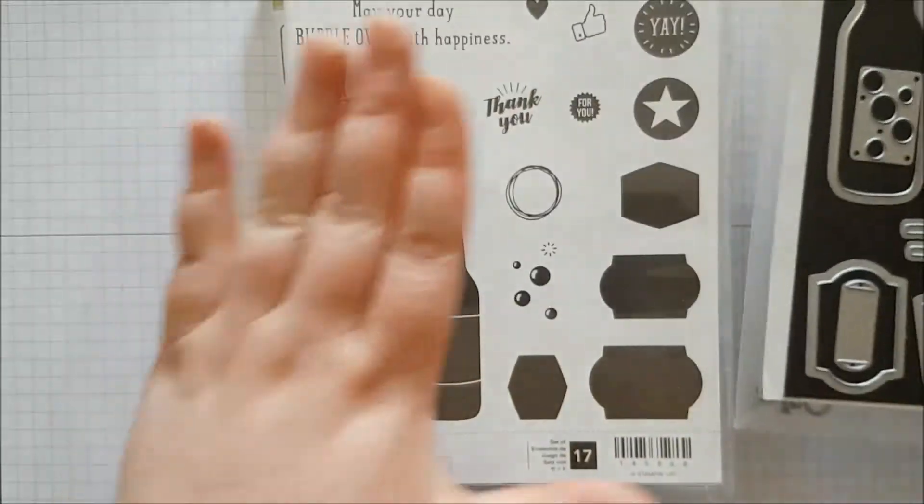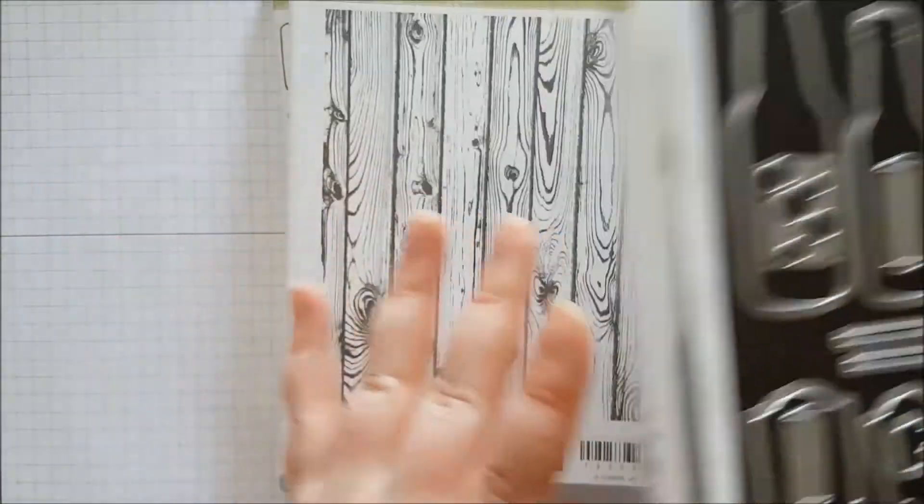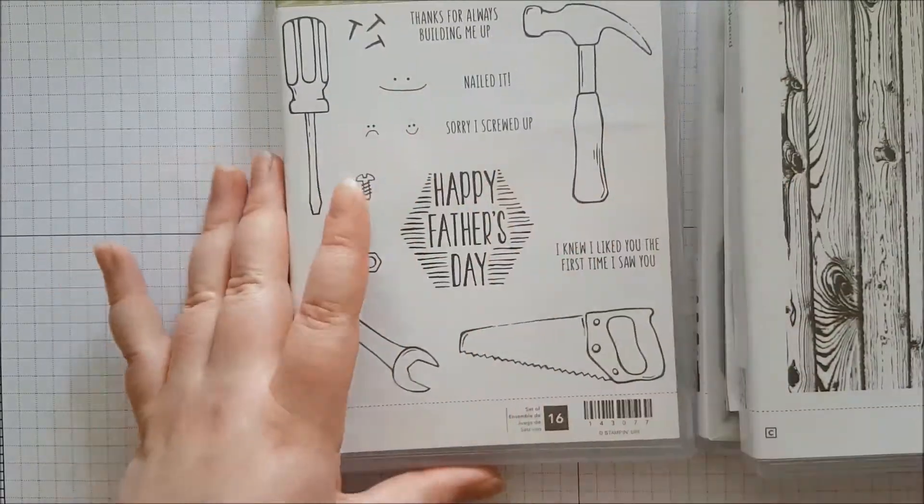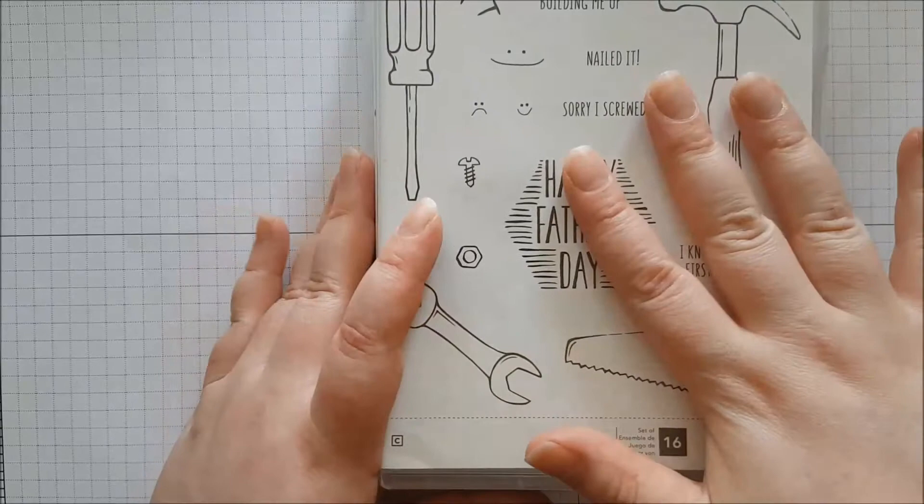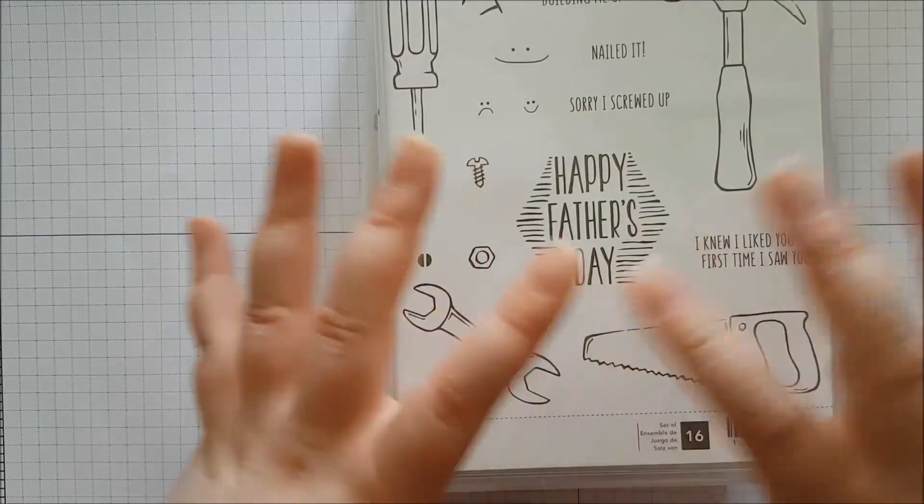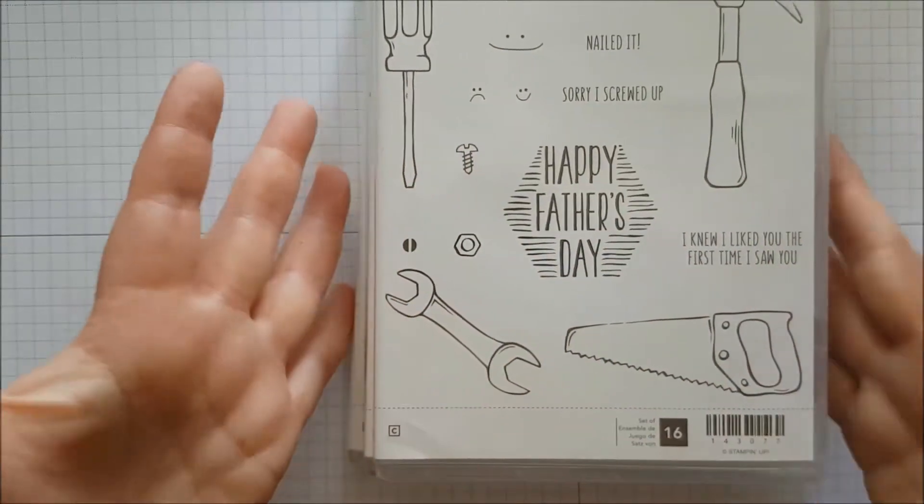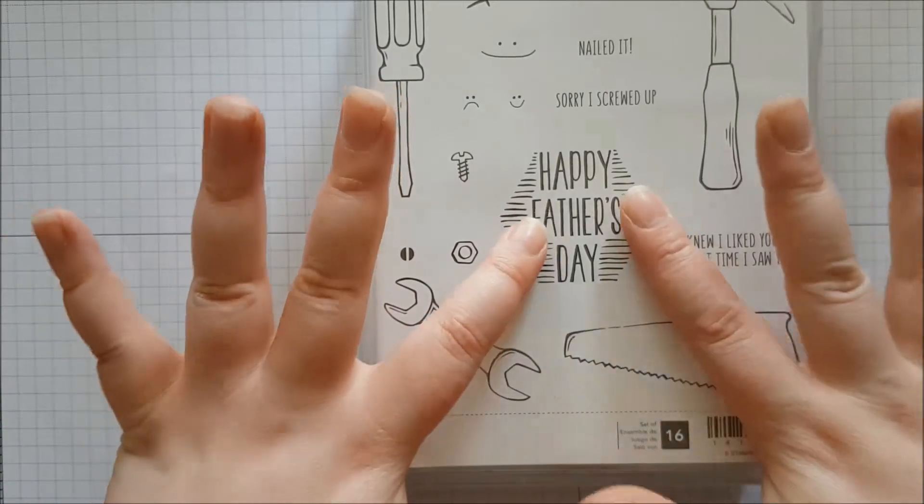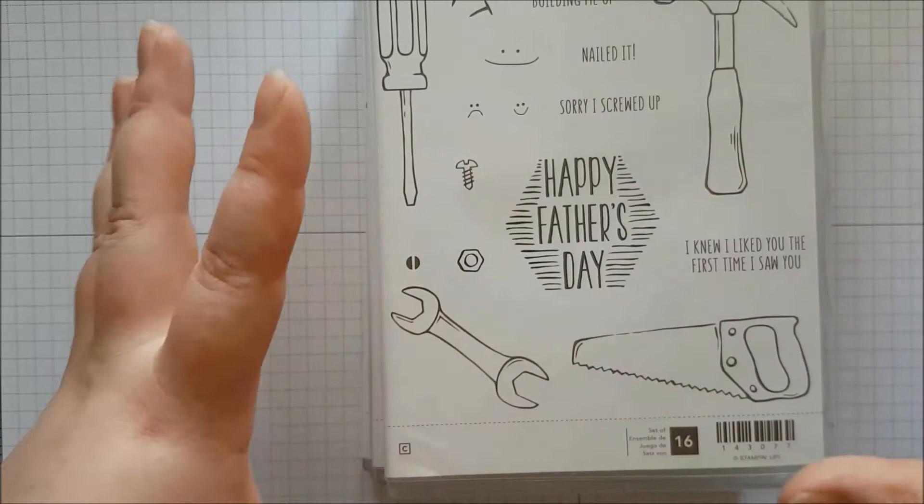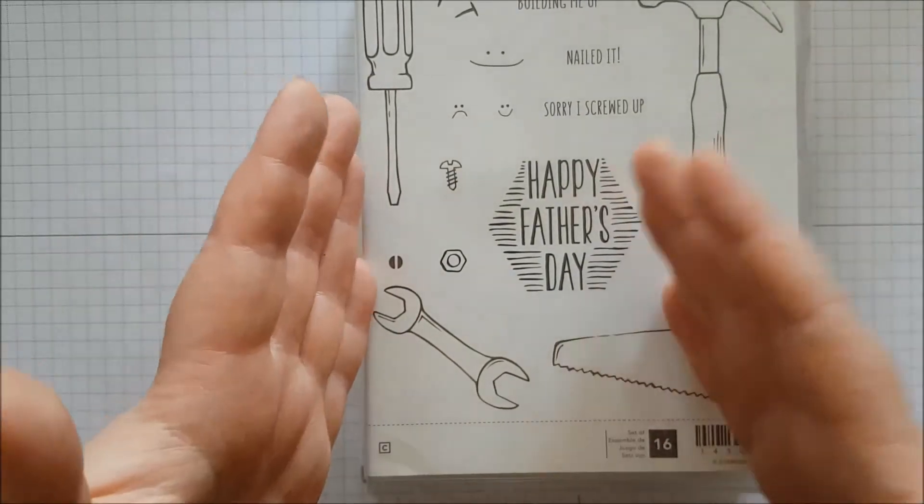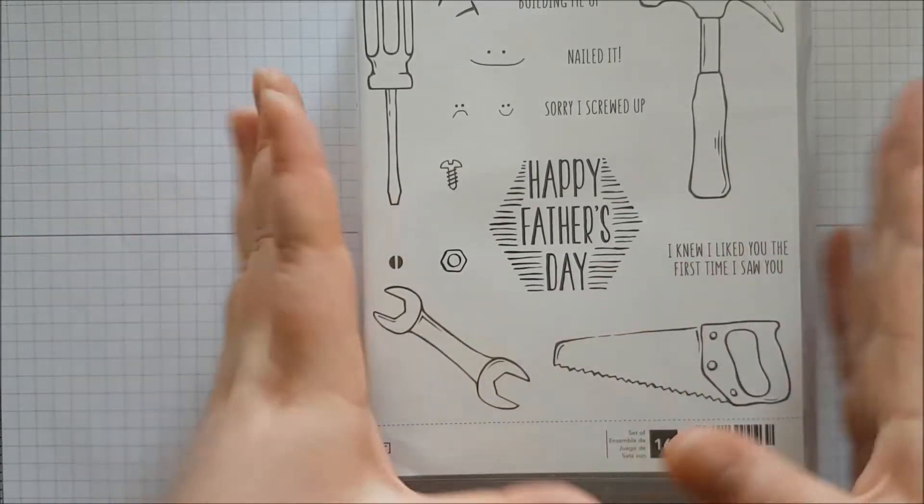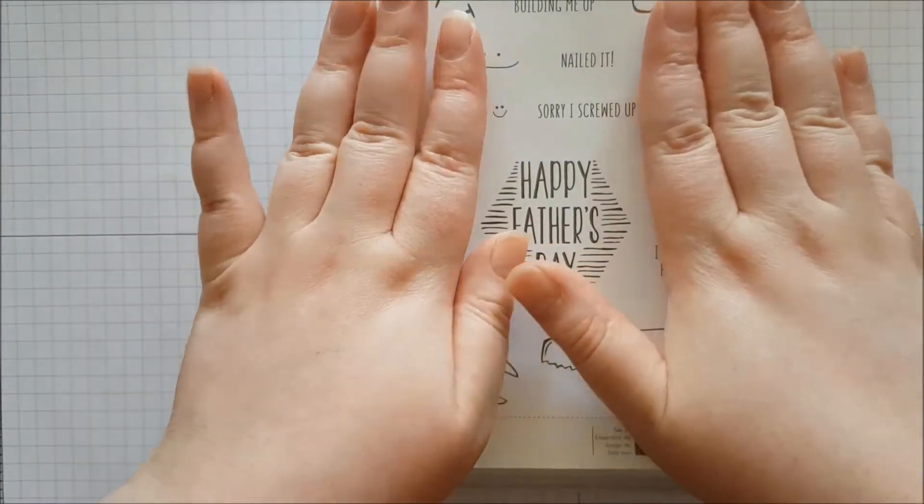For this card you'll need the Bubble Over stamp set and matching dies. You'll also need the Hardwood background stamp. And I'm going to be using a retired stamp set, Nailed It, just for the Father's Day sentiment. I've looked through all my stash and I cannot find a Happy Father's Day sentiment, which is crazy. This is literally the only one. So I will be using a retired set, but you can use absolutely any sentiment you want if you want to make it for a birthday rather than a Father's Day, or if you've got different Father's Day sentiments you'd like to use.